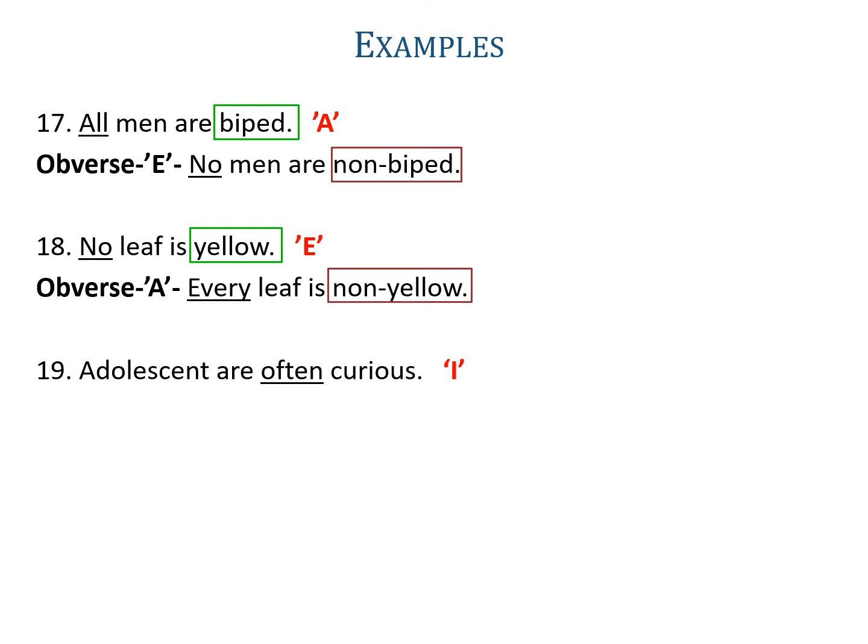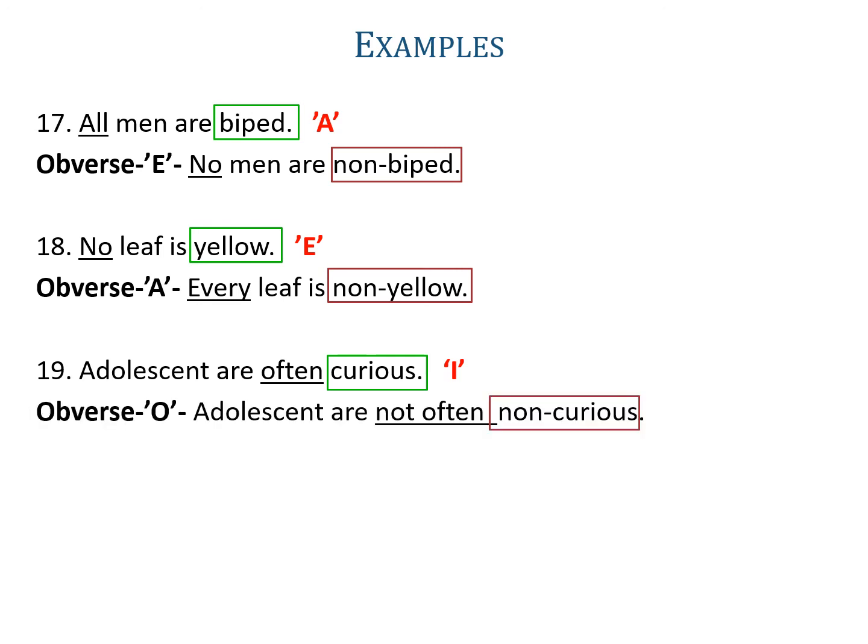Example nineteen: 'Adolescents are often curious.' The word often is used in an I-proposition, so it is an I-proposition. Its obverse will be O, where not often will be used, or you can reduce this into basic symbolic form 'some S is P' and then write its obverse — both are correct. The predicate is curious, its complementary will be non-curious. So the obverse is 'adolescents are not often non-curious'.